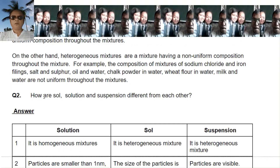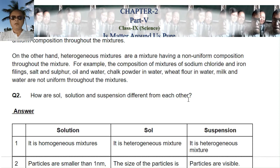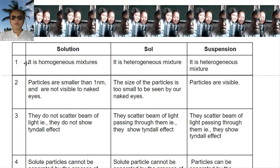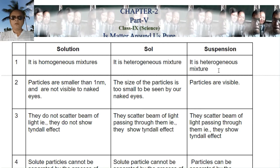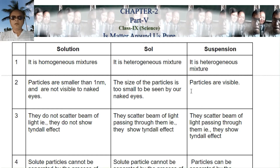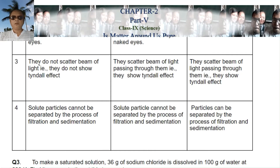Question number two: how are solution, sol, and suspension different from each other? I have made a table. A solution is a homogeneous mixture. A sol is a colloidal mixture. A suspension is also a heterogeneous mixture. In a solution, particles are smaller than one nanometer and are not visible to the naked eye. Sol particles are also very small and not visible to the naked eye. Suspension particles are visible.